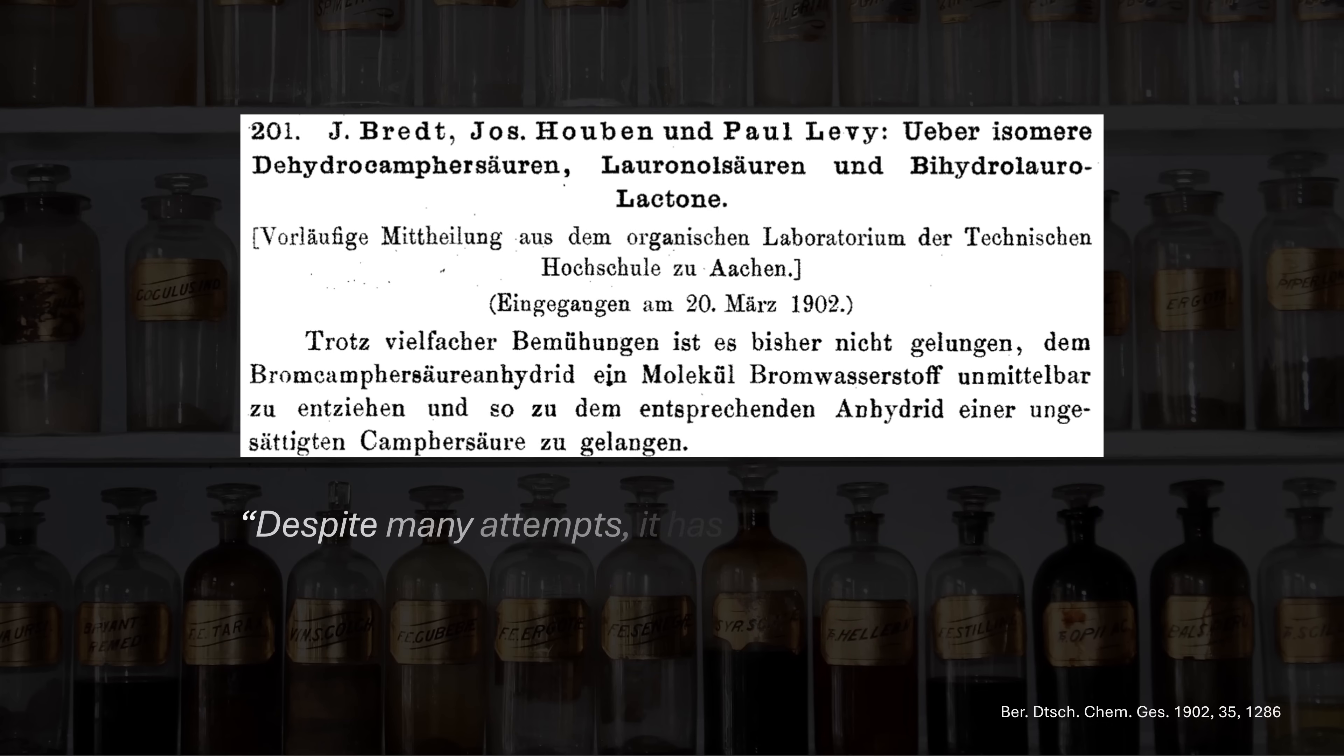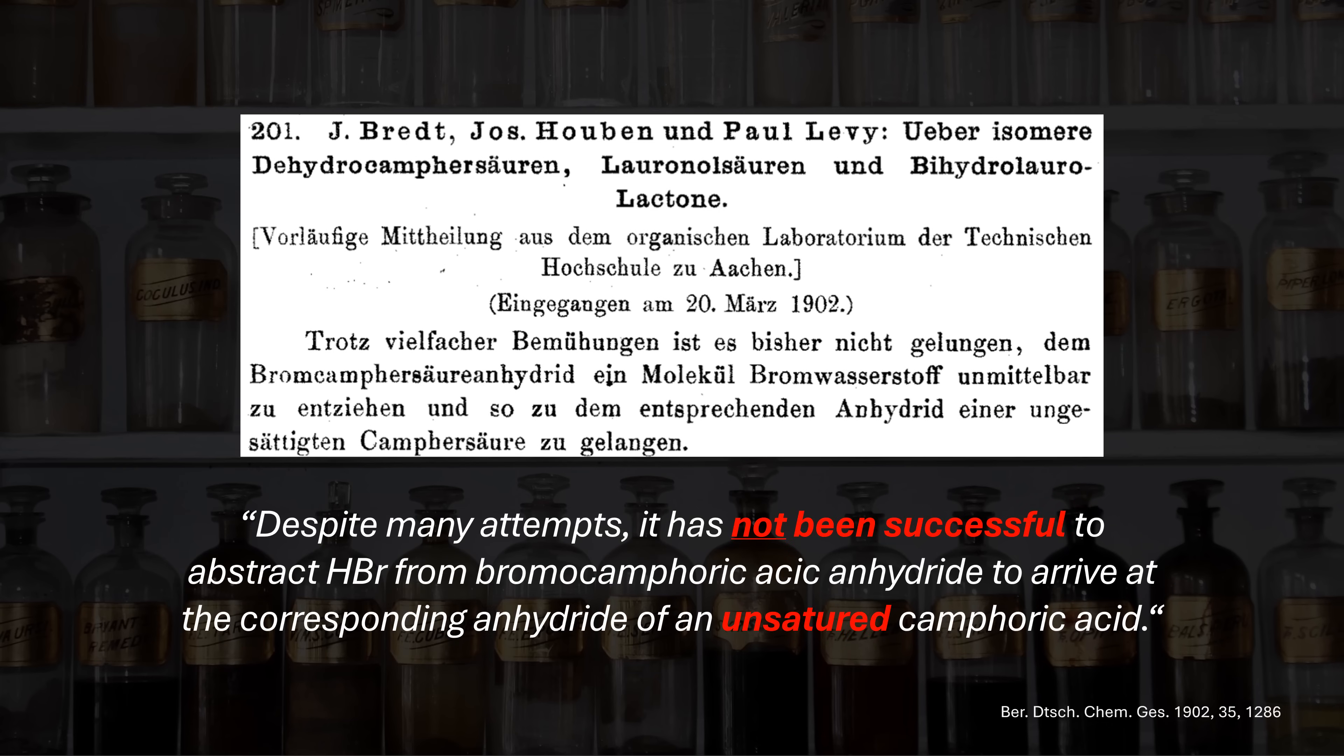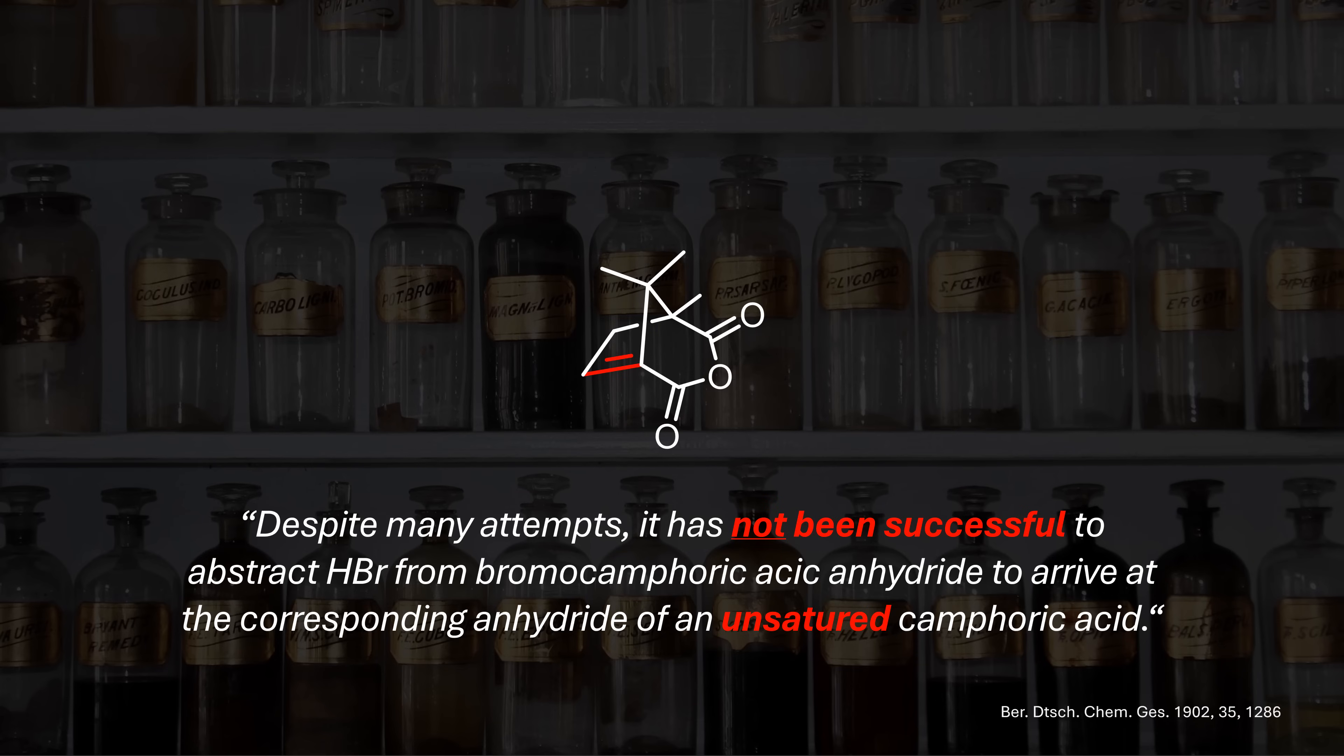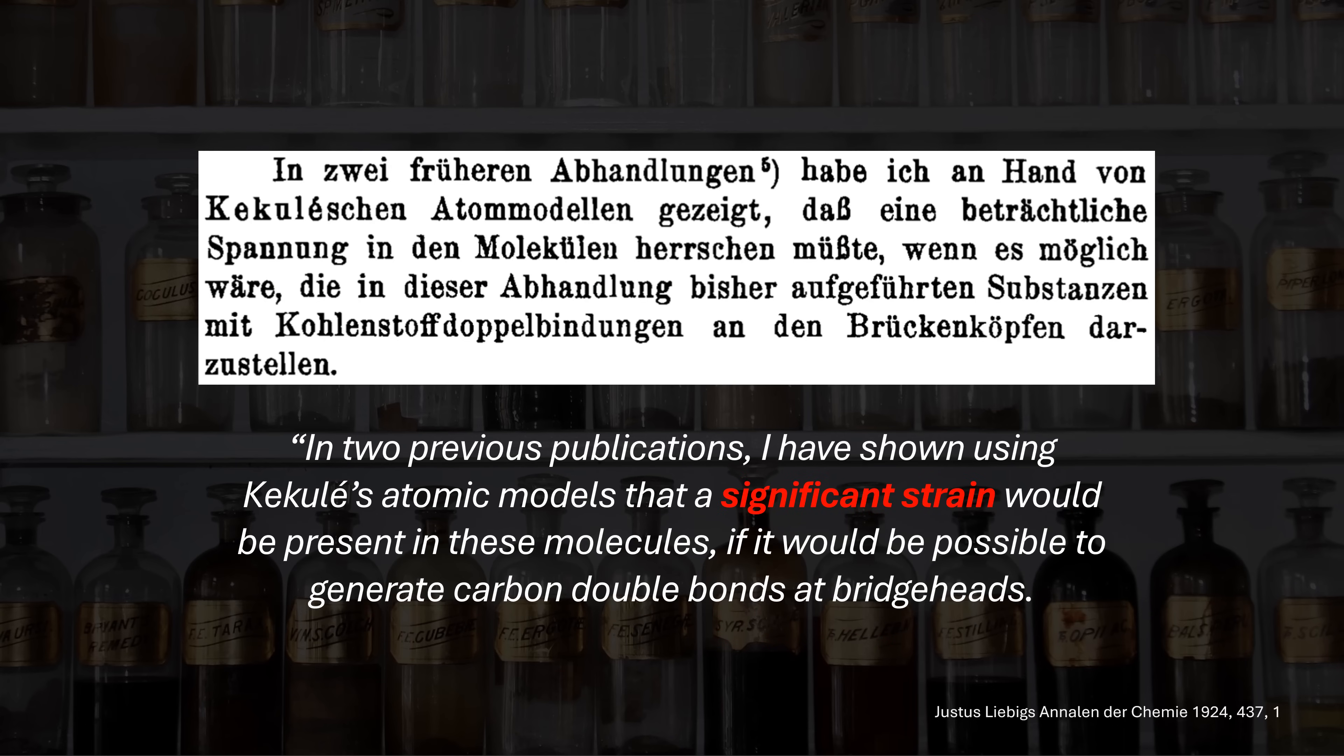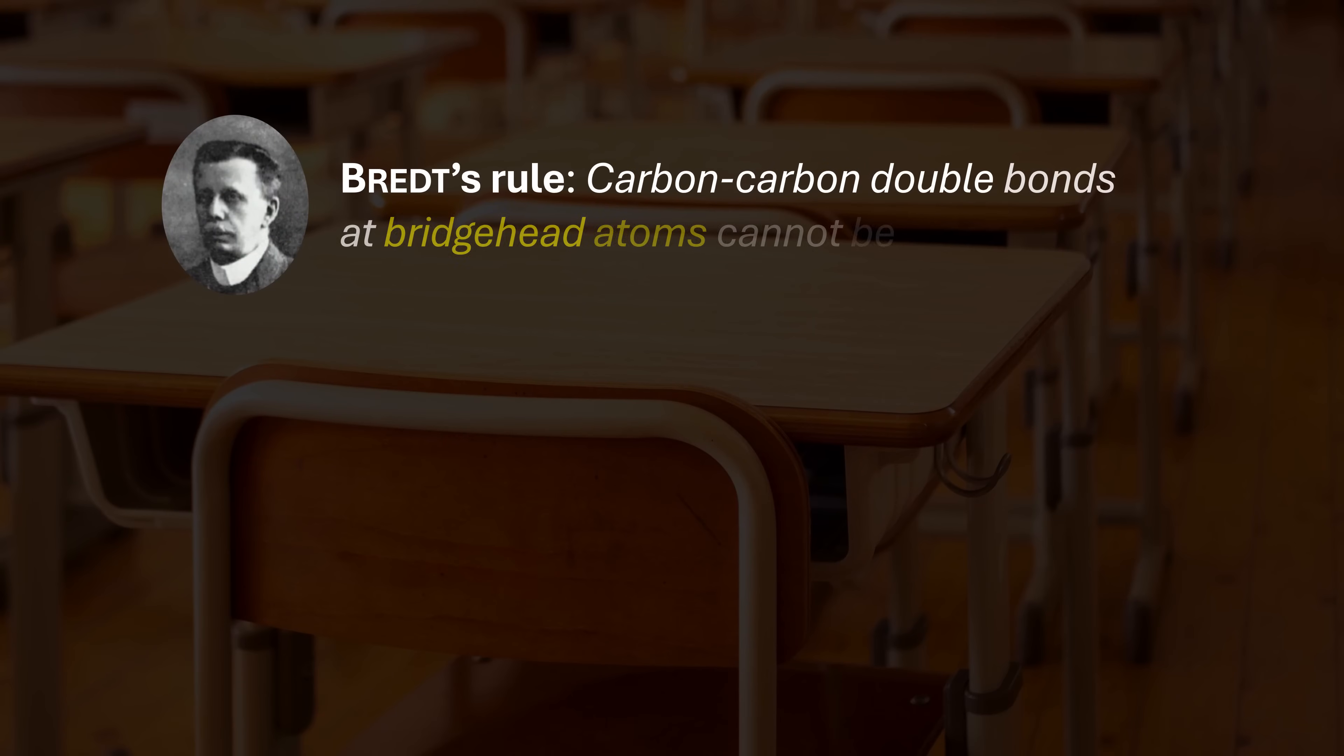Bredt's famous rule originated from these in-depth camphor studies, as he was not able to synthesize certain derivatives as planned. One of the first examples was this anhydride with a double bond at the bridged position. Elimination of a brominated precursor or, alternatively, a condensation reaction of an unsaturated precursor did not prove fruitful. After many synthetic attempts and encountering more quote-unquote impossible olefins, Bredt formalized his guideline and correctly hypothesized that ring strain is the culprit.